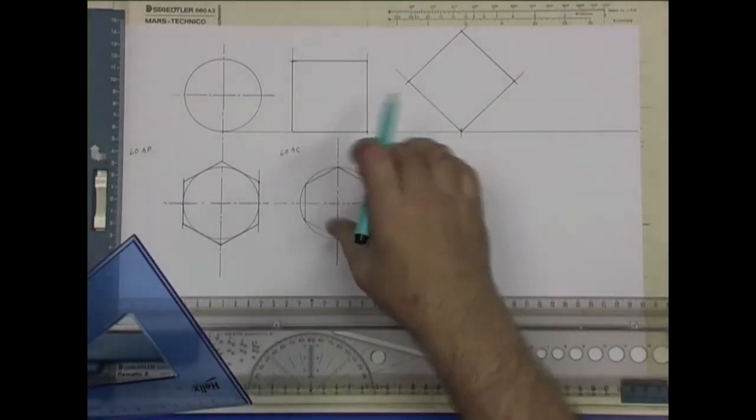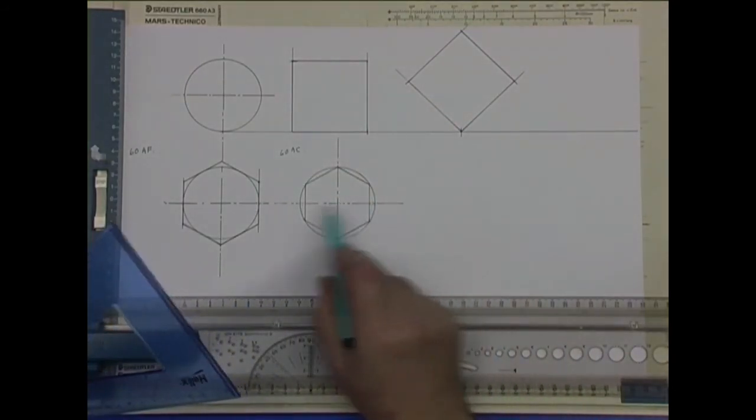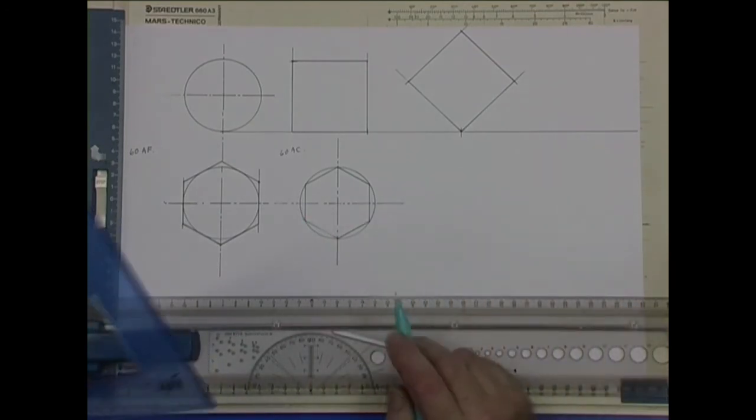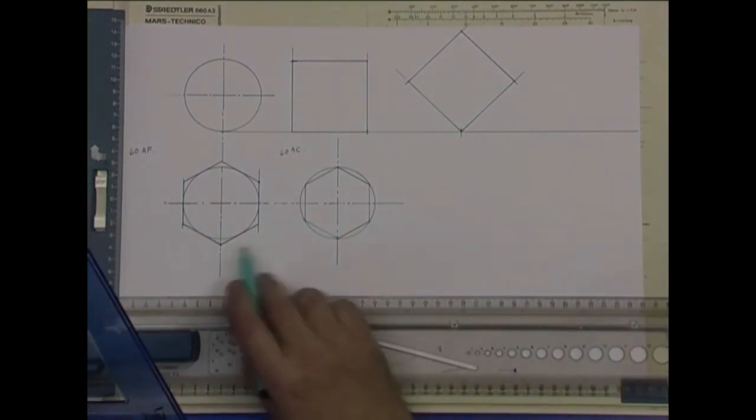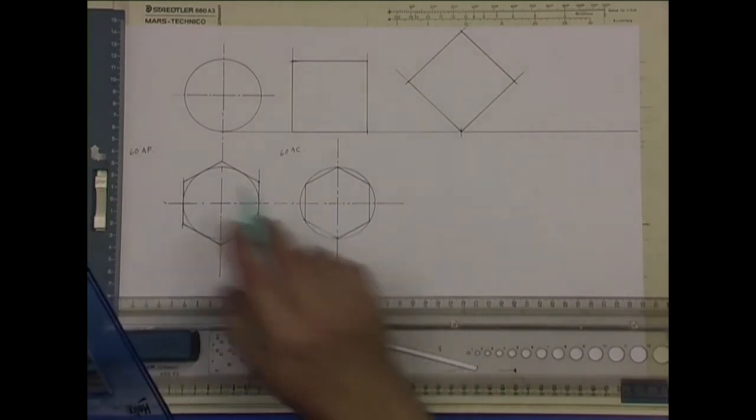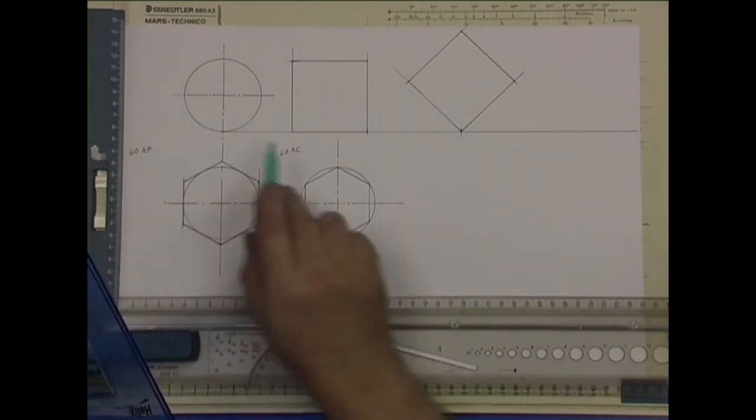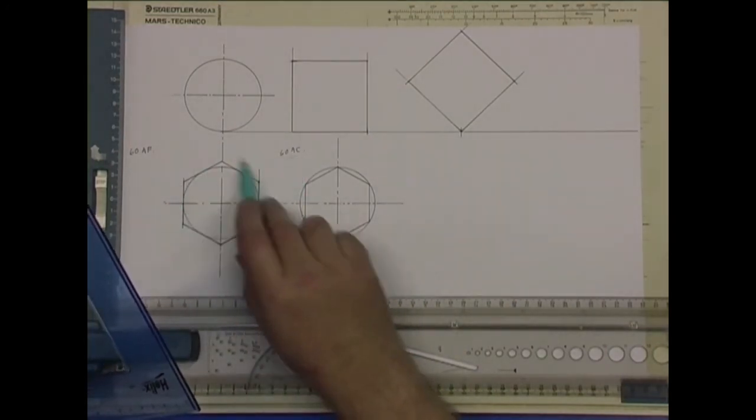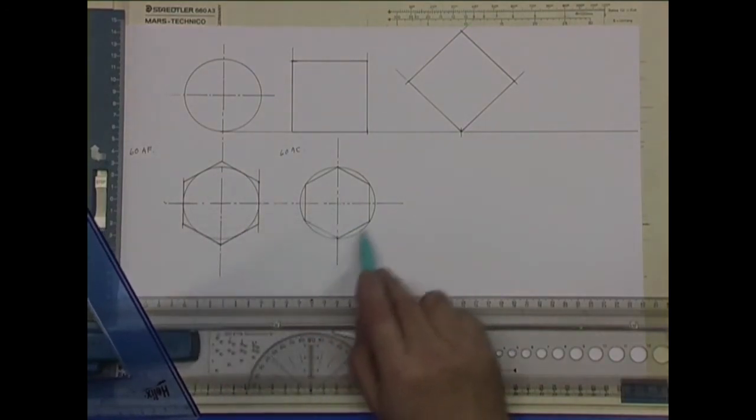If you were asked to draw it that way, you just start at those points there and it would be the same. So the two methods of drawing the hexagon: across the flats and across the corners. One's outside and one's inside.